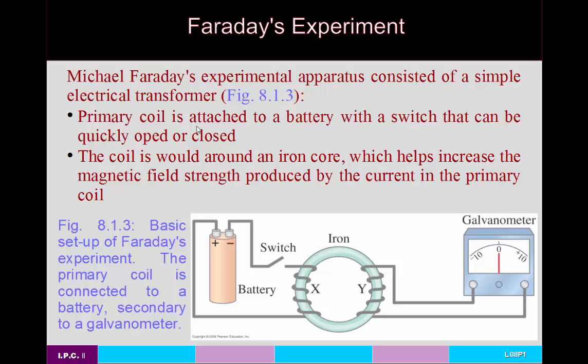Faraday's experimental apparatus was pretty simple. It consisted of something to measure current — an ammeter or galvanometer — connected to a coiled wire that is electrically isolated from other sources, so there's no voltage source in this circuit. Then he has a second coil, the primary coil, connected to a battery with a switch, and an iron core to increase the magnetic field strength produced by the current.